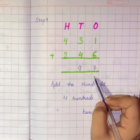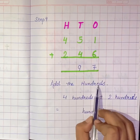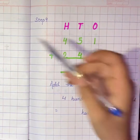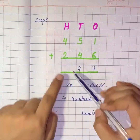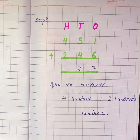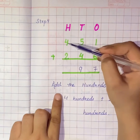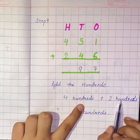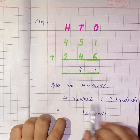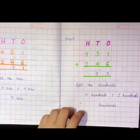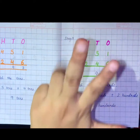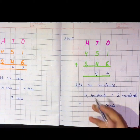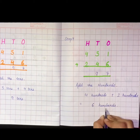Our fourth step will be: add the hundreds. We have added the ones place and the tens place, now we add the hundreds place. At the hundreds we have 4 and 2 — that means 4 hundreds and 2 hundreds. Counting: 1, 2, 3, 4, then 1, 2 — total is 6.